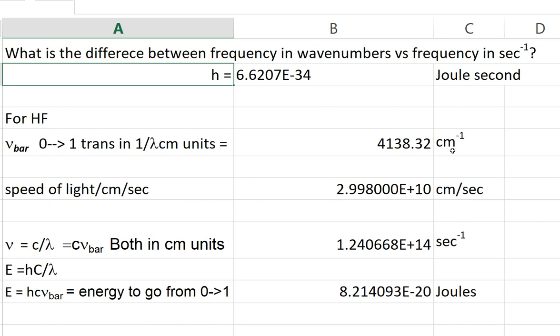Now we need the speed of light in centimeters per second, and that's given here: 3 times 10 to the 10 centimeters per second, or 3 times 10 to the 8 meters per second.